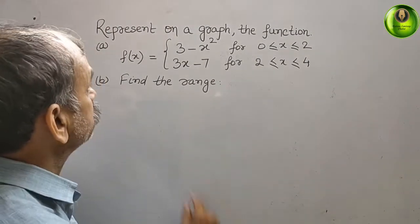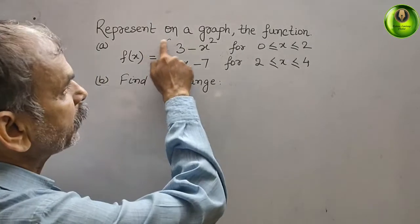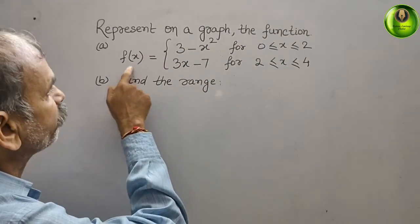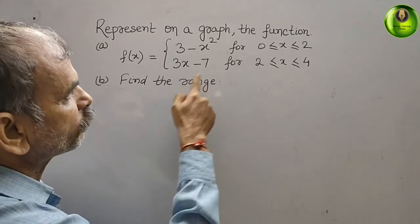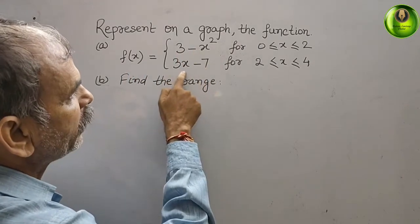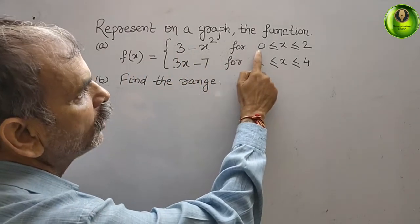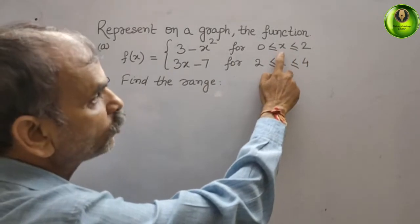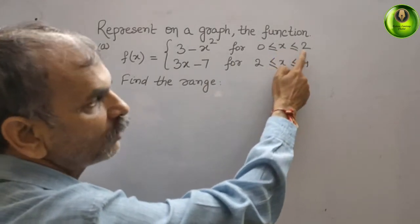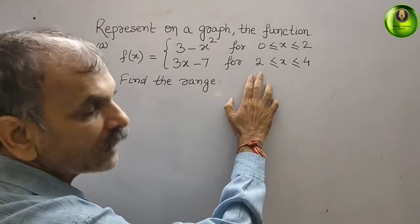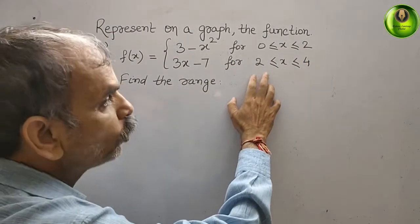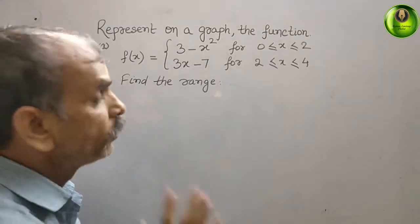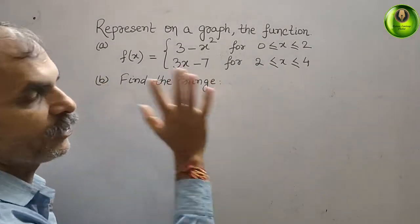Your question is: represent on a graph the function they have given. f(x) is equal to 3 minus x squared for 0 less than or equal to x less than or equal to 2, and for the second piece, 3x minus 7 for 2 less than or equal to x less than or equal to 4. And find the range.